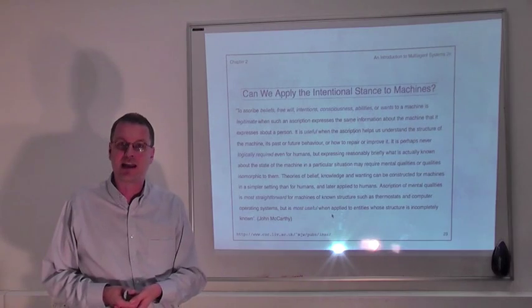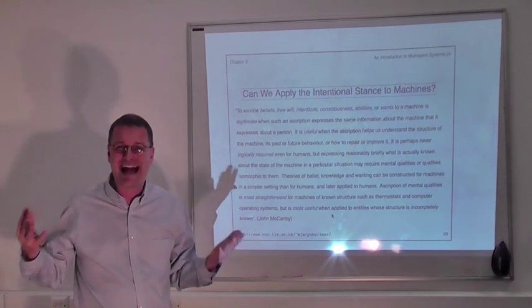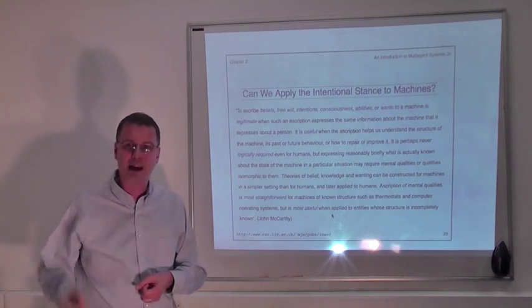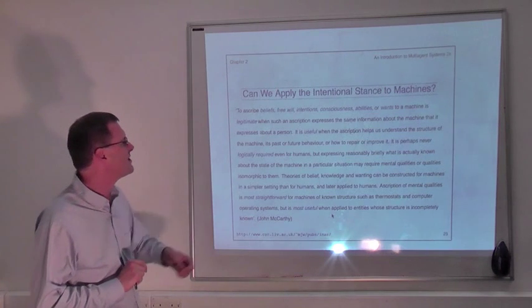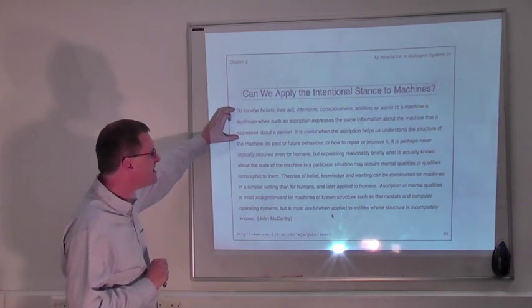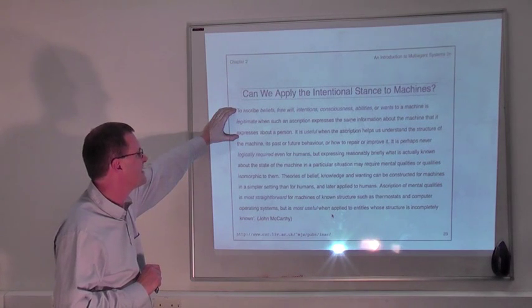If something has a desire to stay dry, then we expect it to act so as to stay dry. So if it believes it's going to rain, we expect it to take an umbrella, or to take some action to keep it dry. So it's legitimate when it expresses the same information about the machine that it expresses about a person.